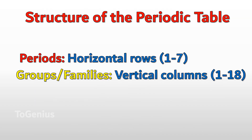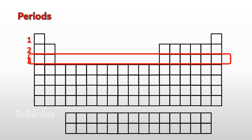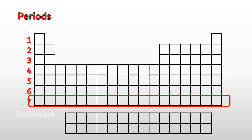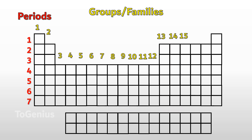Structure of the Periodic Table. The vertical rows in the periodic table are called periods. There are seven rows, which are called periods, in the periodic table. Elements in the same period have the same number of electron shells. The horizontal columns in the periodic table are called groups. There are 18 horizontal columns, which are called groups, in the periodic table. Elements in the same group have similar chemical properties, because they have the same number of valence electrons.